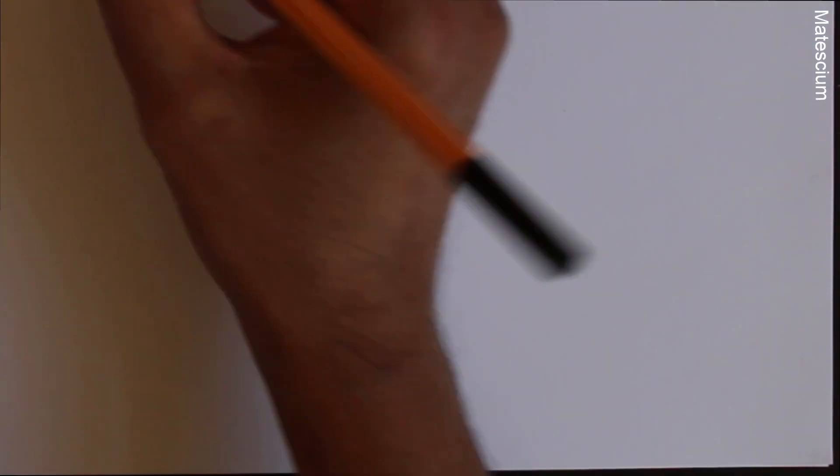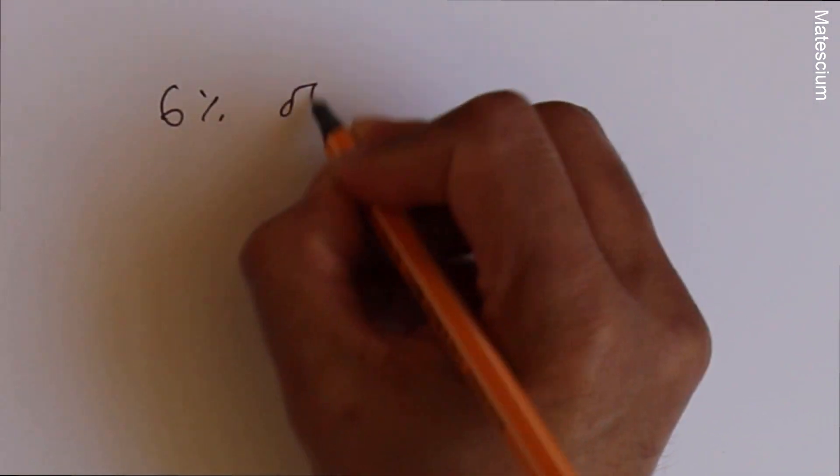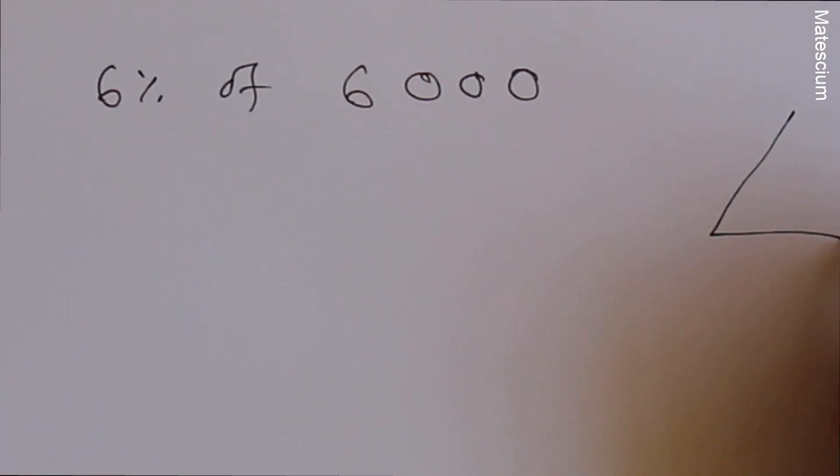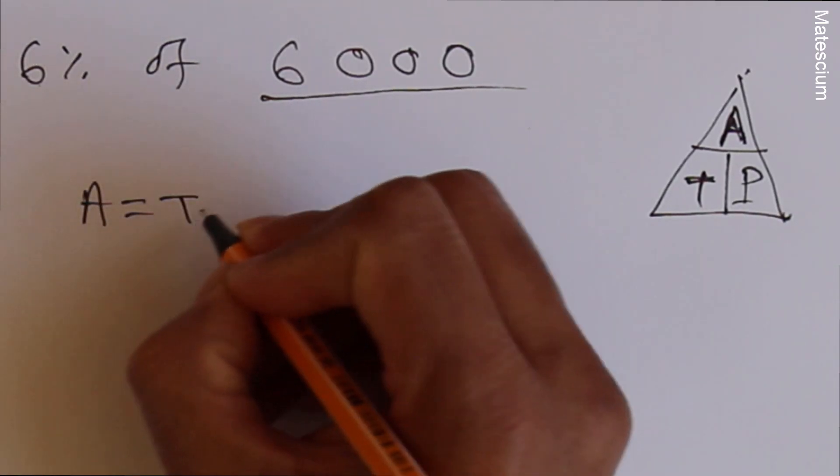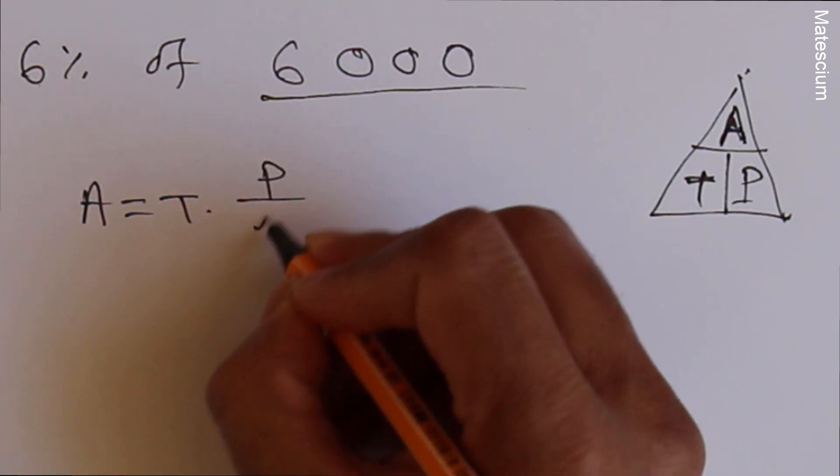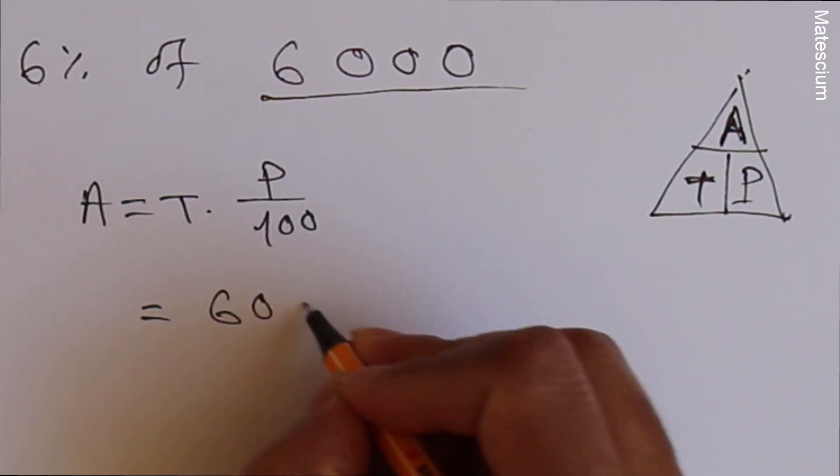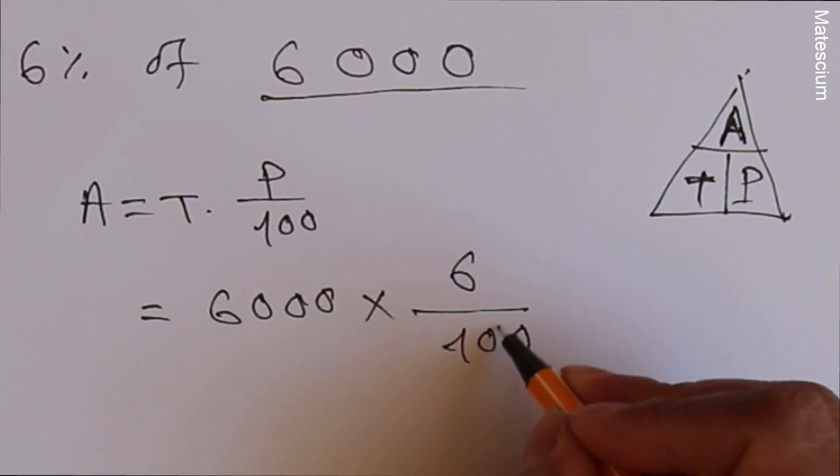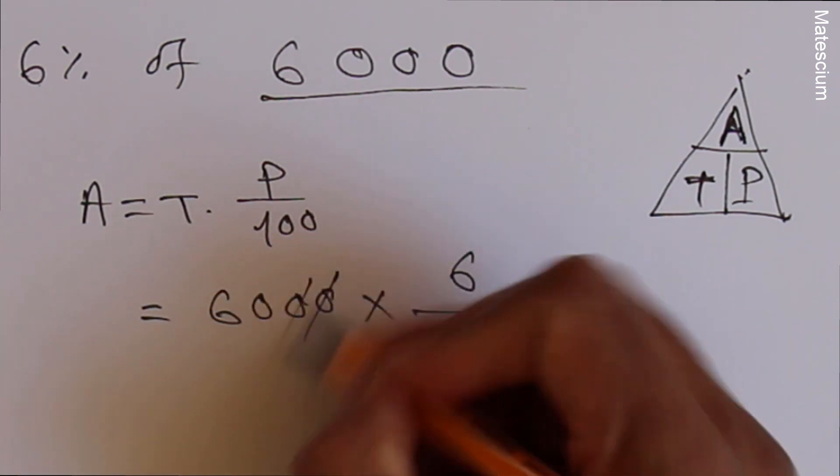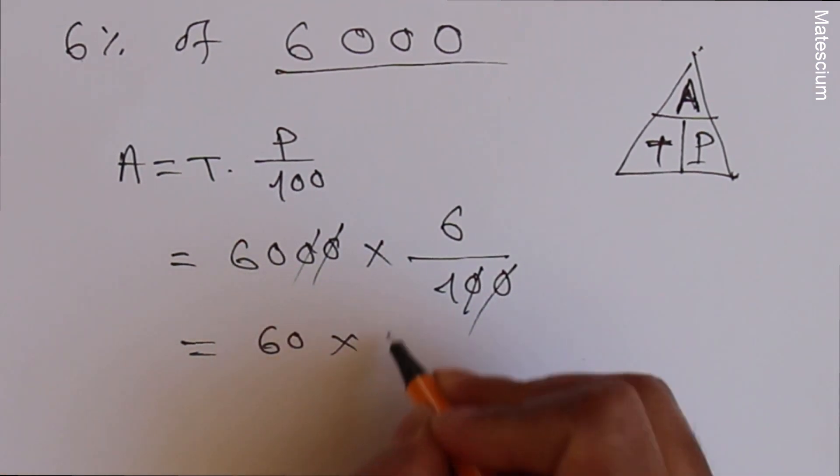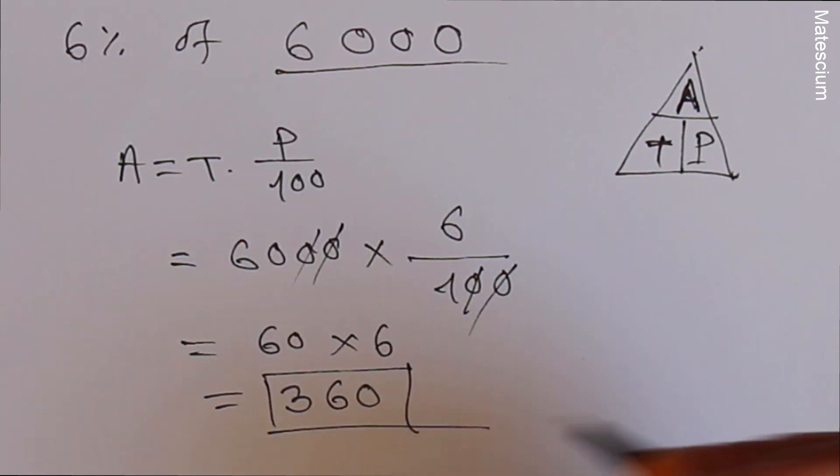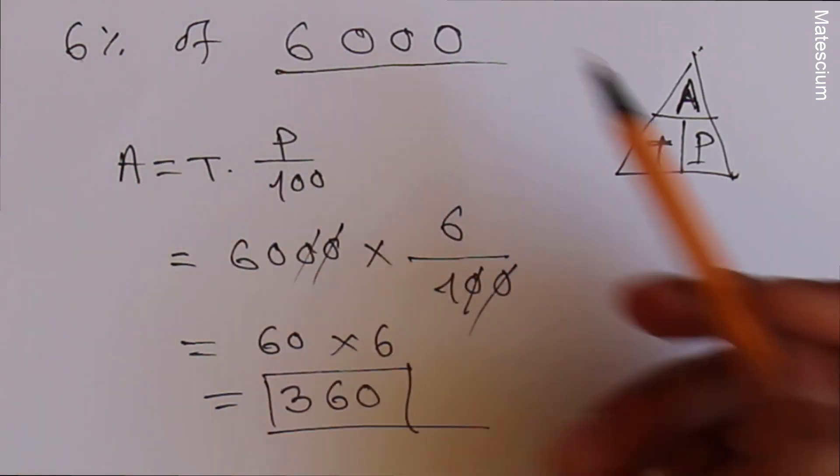Let's do one more exercise. Let's say 6% of 6000. Apply the same formula, ATP formula. A equals T times P over 100. T is 6000 times P is 6 over 100. So this and that 0 can cut. Remaining is 60 times 6. That means 360. Yes, this is the answer. That means 6% of 6000 is 360.